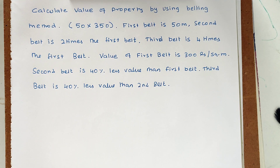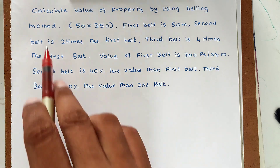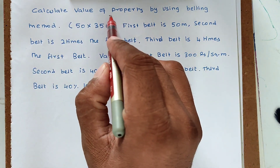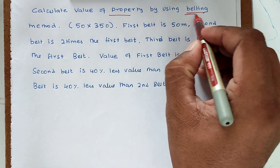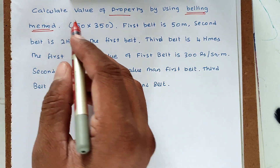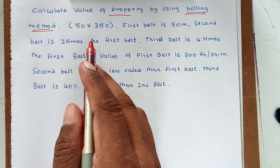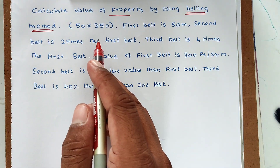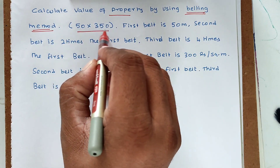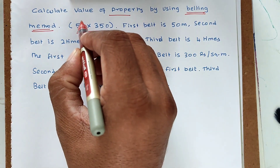Hello friends, welcome to Student Engineering Exam. Today we are going to see a problem related to valuation — specifically property valuation. The problem is to calculate the value of the property using the belting method. The dimension of the property is 50 meters into 350 meters.